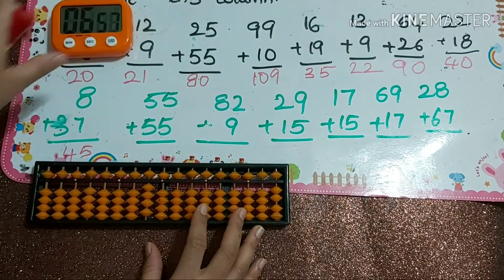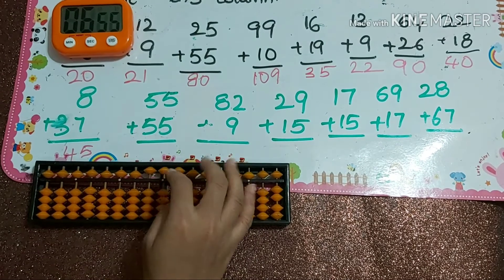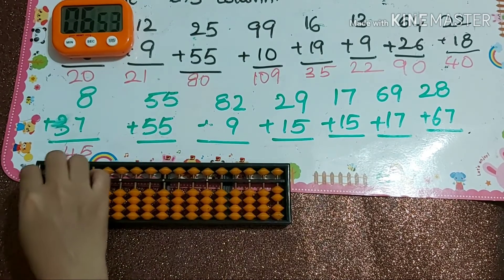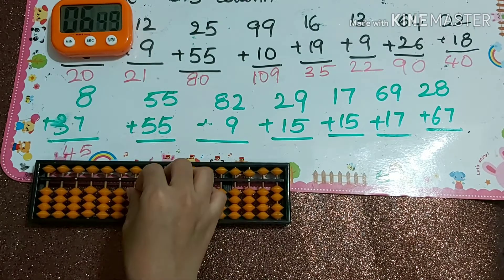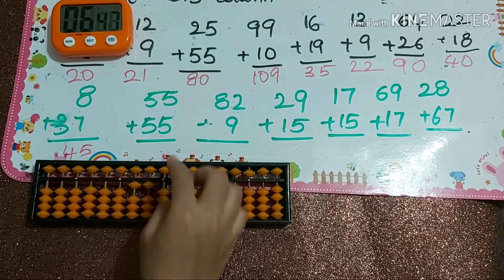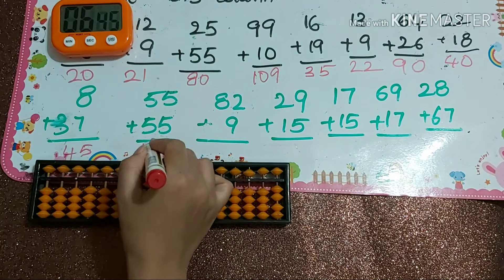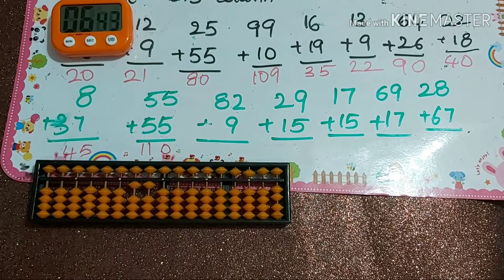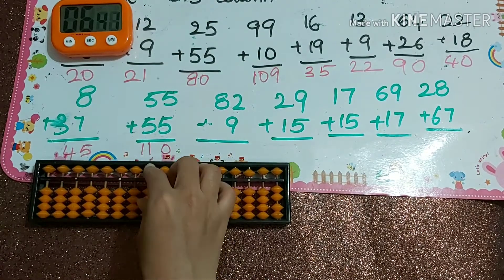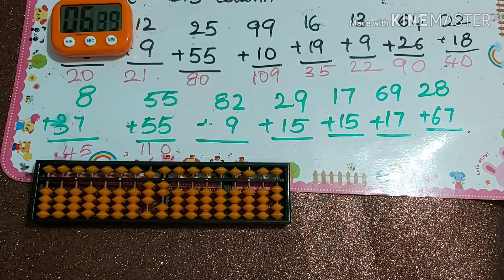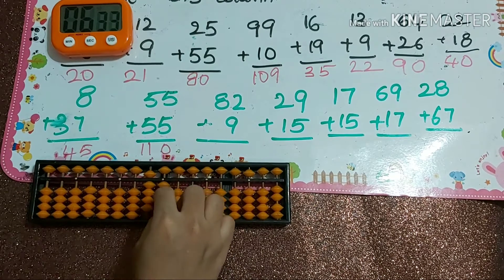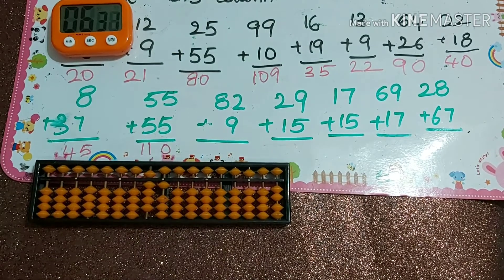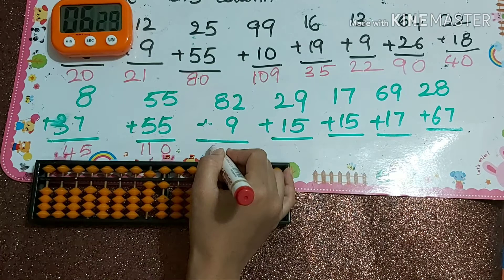Next: 55 plus 55. We use plus 10 minus 5, then plus 10 minus 5 again, giving 110. Next: 82 plus 9 — plus 10 minus 1 — so the answer is 91.